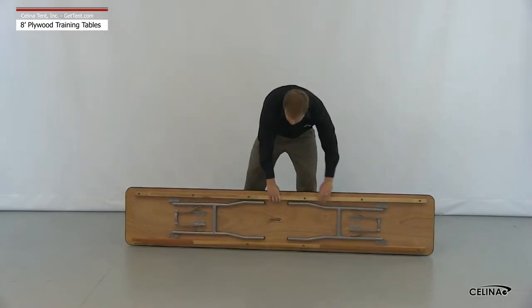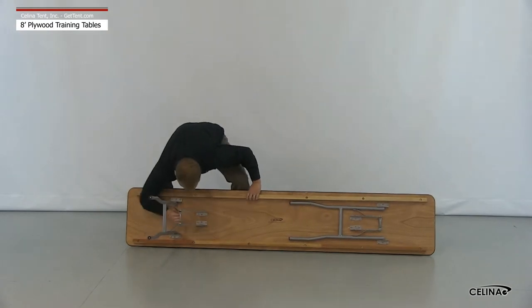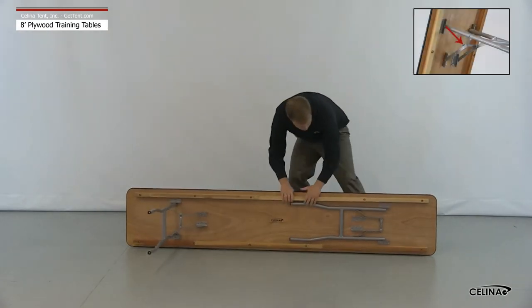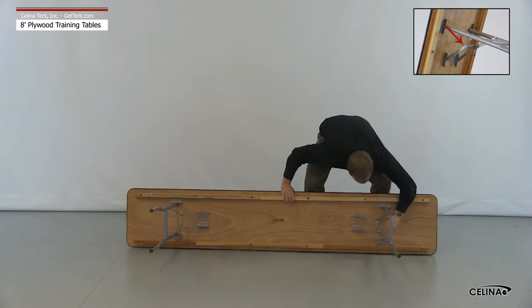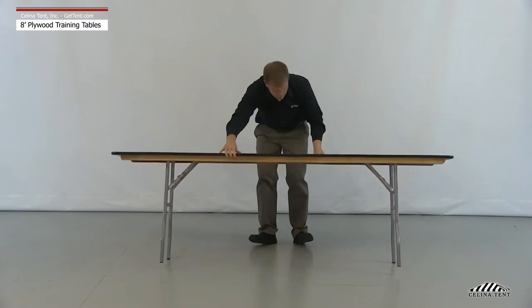To set up, set the table on its side. Pull the legs to their extended positions, then grasp the cross-handle portion between the legs and lock them into place by making sure the dimple lock in the folding portion snaps together. Finally, set the table upright.